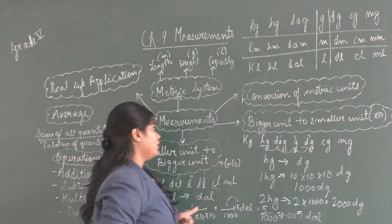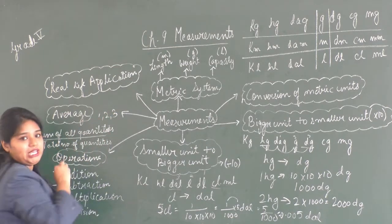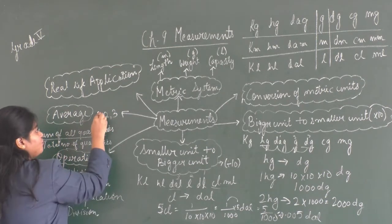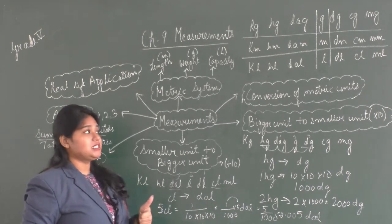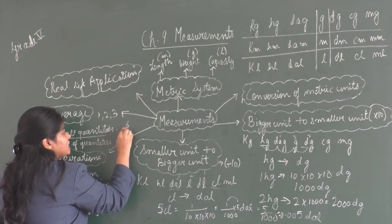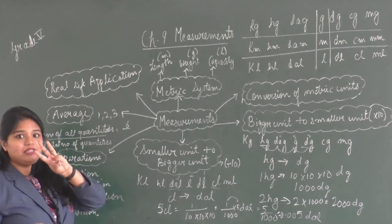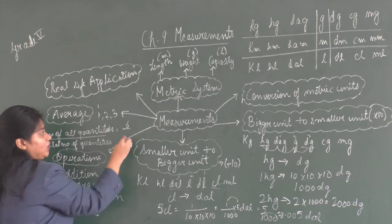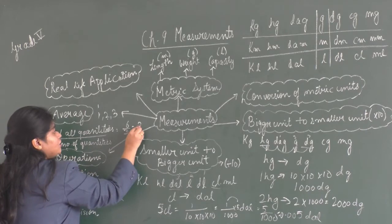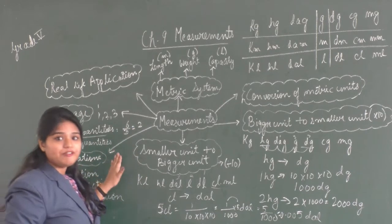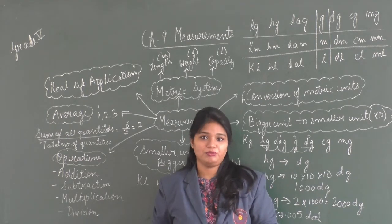For example, if I have the quantities 1, 2, and 3, to find the average I add them: 1 + 2 + 3 = 6, then divide by the number of quantities, which is 3. So the average is 6 ÷ 3 = 2. Using the average formula, we can solve many real-life word problems.